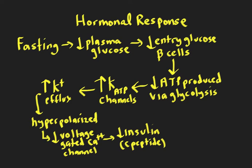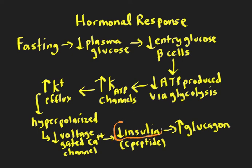As a result of decreased insulin — because insulin inhibits glucagon secretion from the alpha cells — there's also a concomitant increase in glucagon secretion from the alpha cells. So insulin levels go down during fasting, and glucagon levels increase during fasting. This is the hormonal profile during a fast, looking at insulin and glucagon.